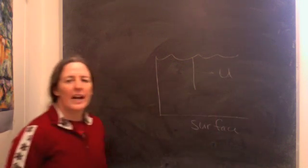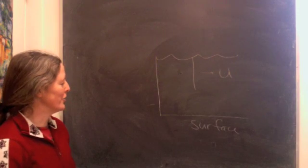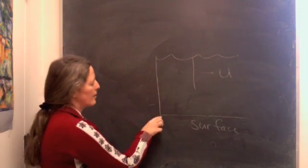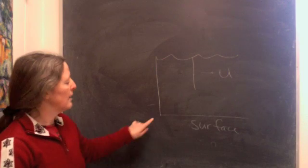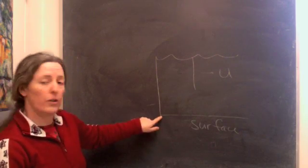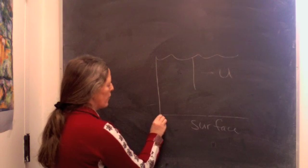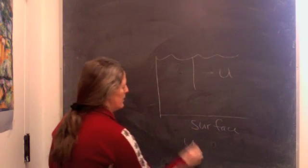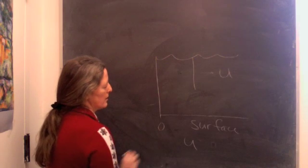We have an average flow velocity u. Right at the sediment-water surface, due to friction of the surface, the flow speed is zero. If we plot u, it's zero here.